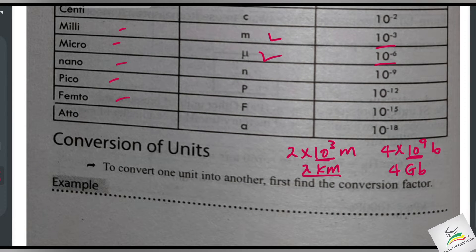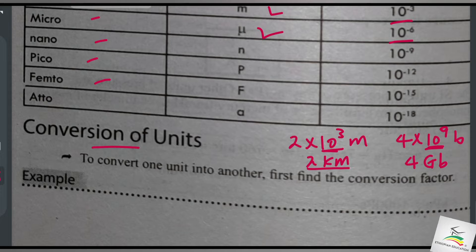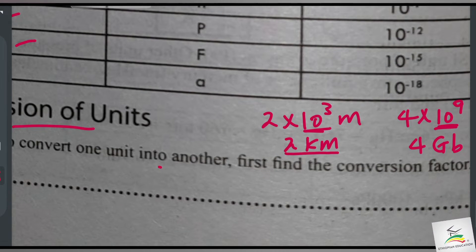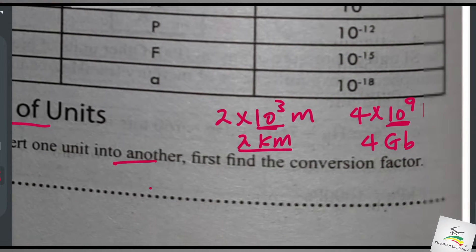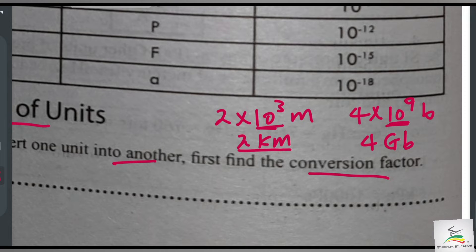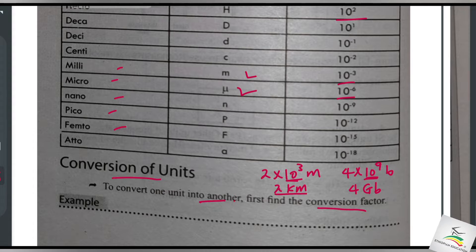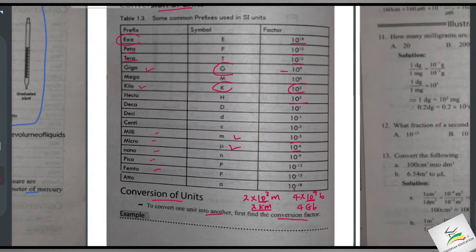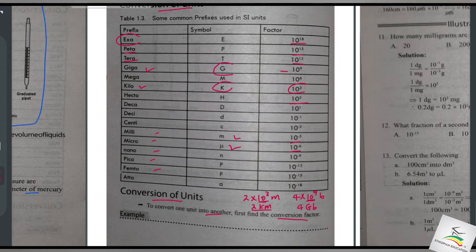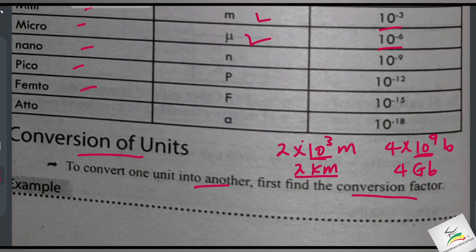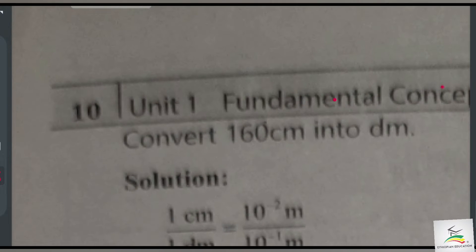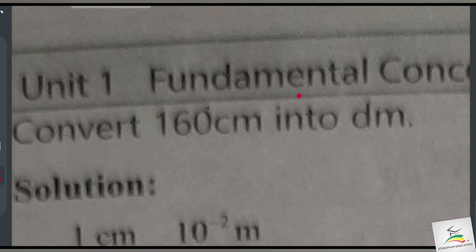Conversion of units: to convert one unit into another, first find the conversion factor. For example, centimeters to meters, or kilometers to meters, and so on.